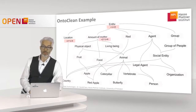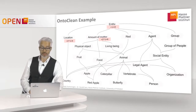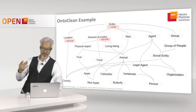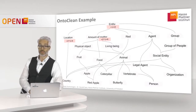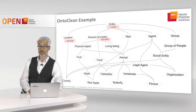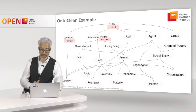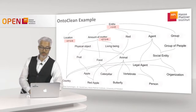For 'amount of matter': it also receives a new identity criterion — it doesn't simply inherit from entity, being identified by its specific matter. For unity, an amount of matter cannot be considered a whole; it is always some amount of something, never a complete whole thing. But it is rigid — if it ceases to exist, it's gone.